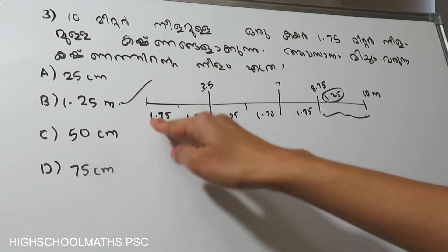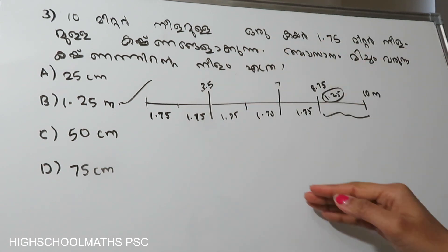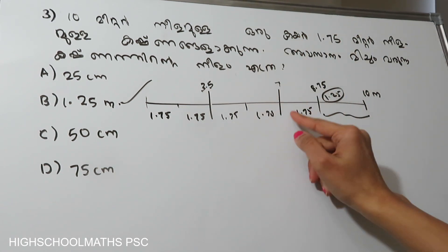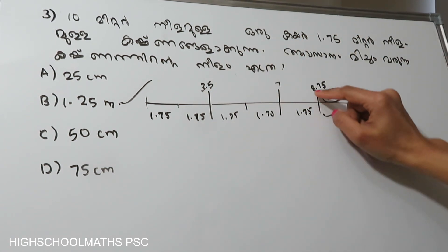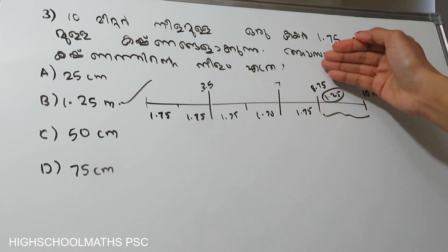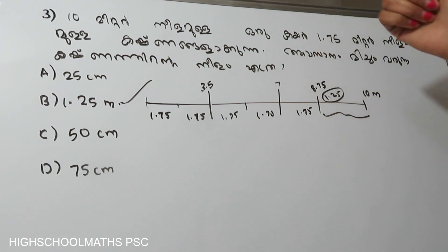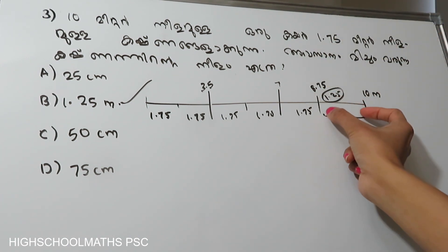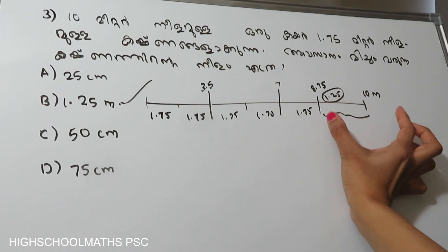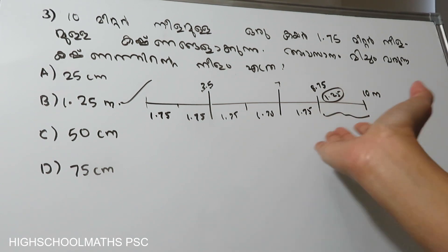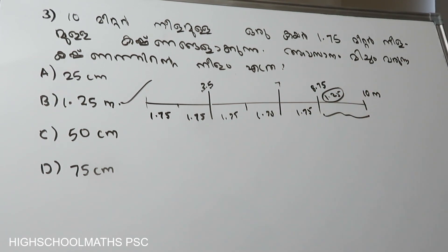Now, if we cut 1.75, we have 8.75. If we cut 1.75 again, we cut 1.75. If we cut 1.75, we cut 1.75. Option B.